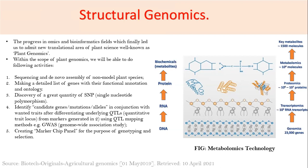Genome-wide association studies are very much needed to have a proper understanding of the genome of a particular species. Using those studies, we can map genome sequences and identify mutations, alleles, or certain candidate genes that are overexpressed. Other technologies include marker chip panels for genotyping, selection, and annotation.